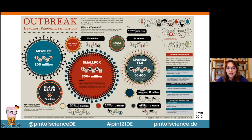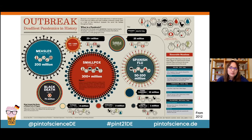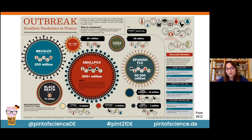Smallpox during the time of its existence would have killed over 300 million people — some estimates go as far as 500 million. The reason for that is that smallpox has been around for a really long time. People have suffered from smallpox from 10,000 BC onwards up to 1979, and perhaps even earlier — we just don't have any evidence for earlier infections yet.